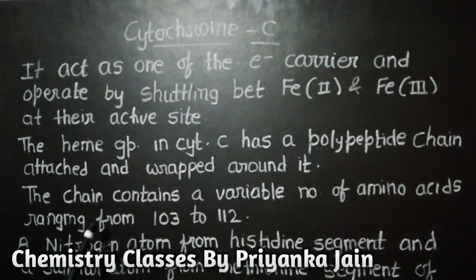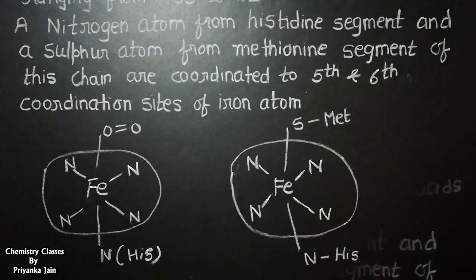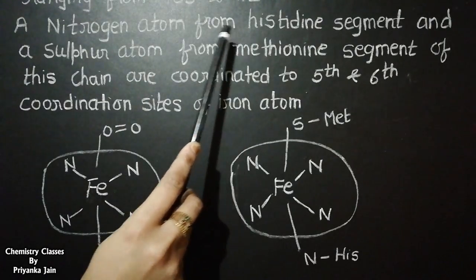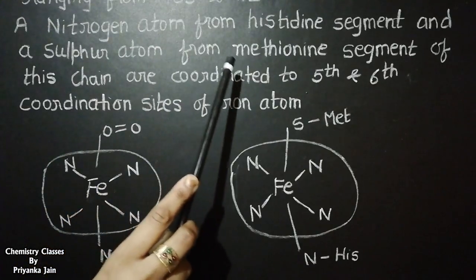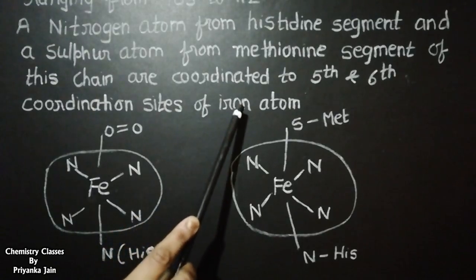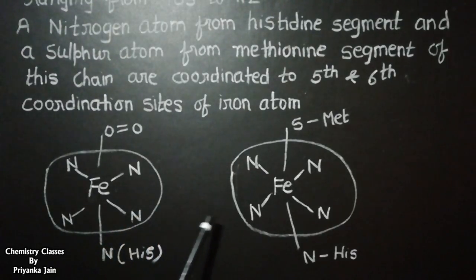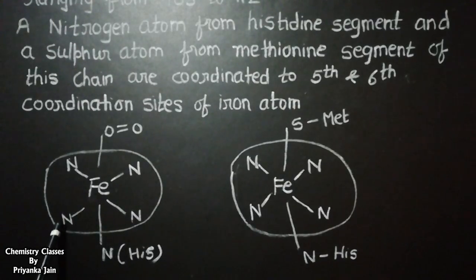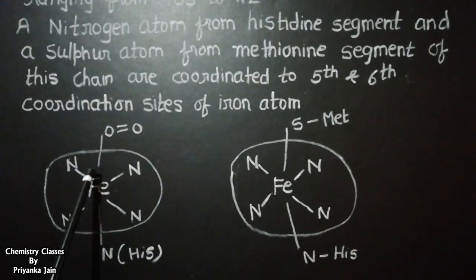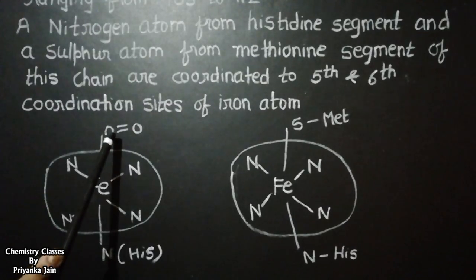The polypeptide chain contains a variable number of amino acids ranging from 103 to 112. A nitrogen atom from a histidine residue and a sulfur atom from a methionine residue of this chain are coordinated to the fifth and sixth coordination positions of the iron atom. In hemoglobin, the four coordination sites are occupied by the nitrogen atoms of the porphyrin ring, the fifth position by nitrogen of the histidine residue, and the sixth site can be occupied by dioxygen.